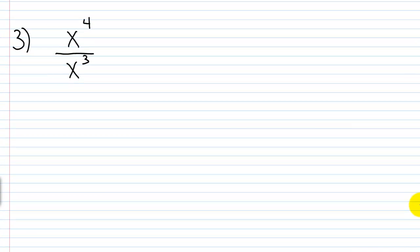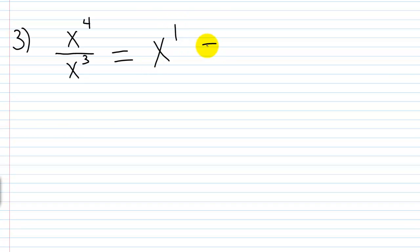For part 3, we have x to the fourth power over x cubed. The base is the same, so we keep that base and subtract exponents: 4 minus 3 is 1. So this is x to the first power, or simply x.